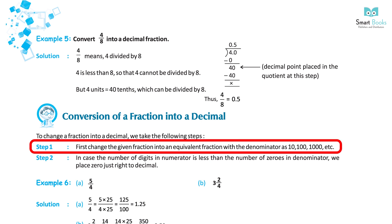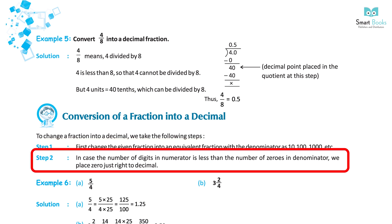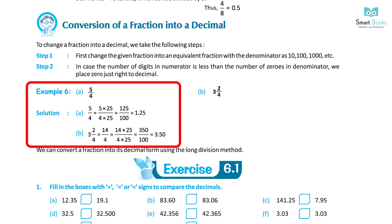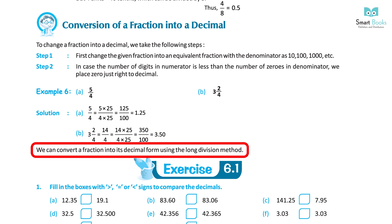Another method: Step 1: Change the given fraction into an equivalent fraction with denominator 10, 100, 1000, etc. Step 2: If the number of digits in the numerator is less than the number of zeros in the denominator, place a zero just right of the decimal point. Example 6: A. 5 upon 4 equals 125 upon 100, which equals 1.25. B. 3 and 2 upon 4 equals 14 upon 4 equals 350 upon 100, which equals 3.50.